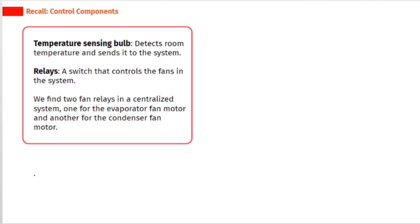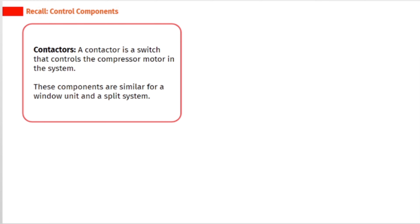The temperature sensing bulb detects room temperature and sends it to the system. Relays are switches that control the fans in the system. We find two fan relays in a centralized system: one for the evaporator fan motor and another for the condenser fan motor. A contactor is a switch that controls the compressor motor in the system.